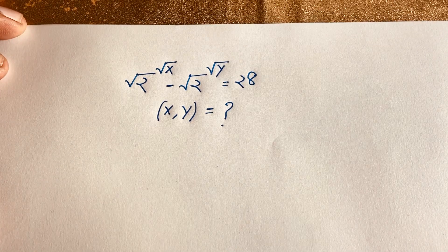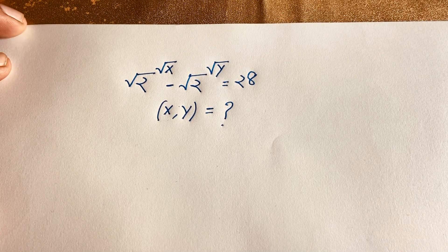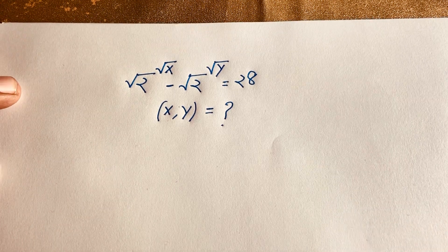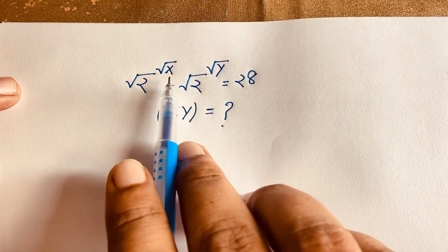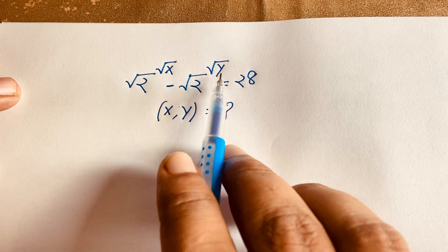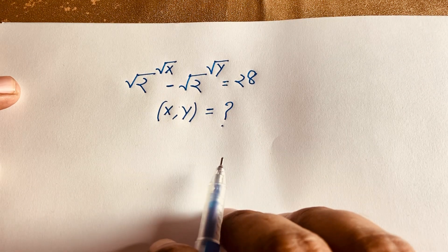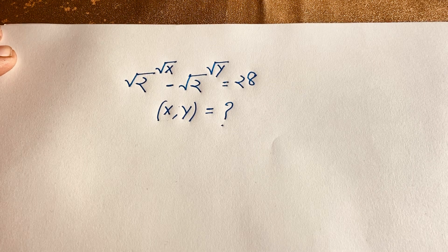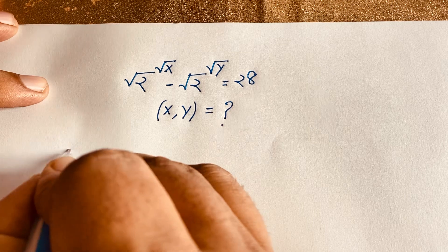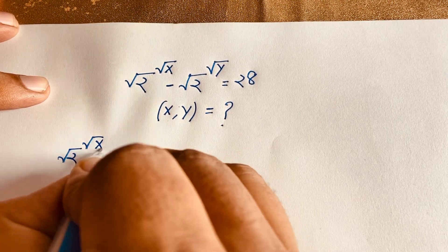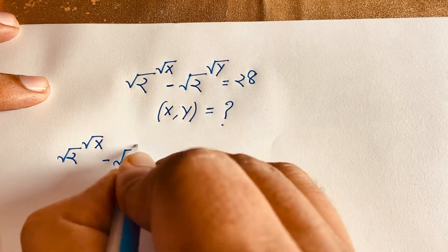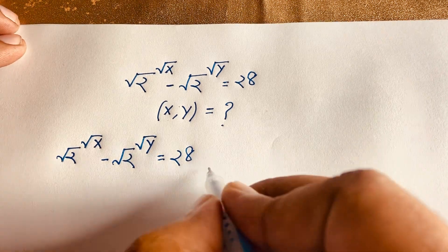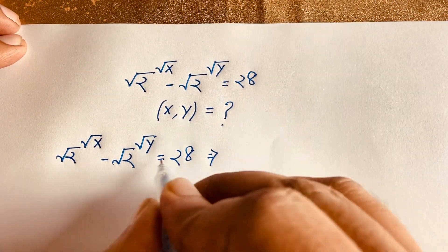Hello everyone. In this video we solve this interesting Math Olympiad question — a radical math olympiad question. The question is: square root of 2 to the power square root x, minus square root of 2 to the power square root y, is equal to 28. What are x and y? Let's start.